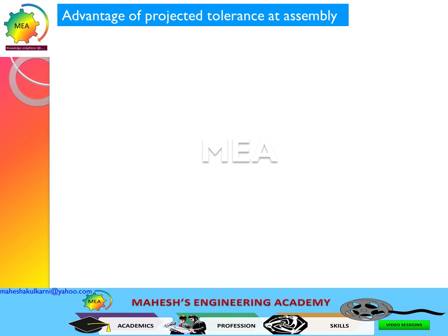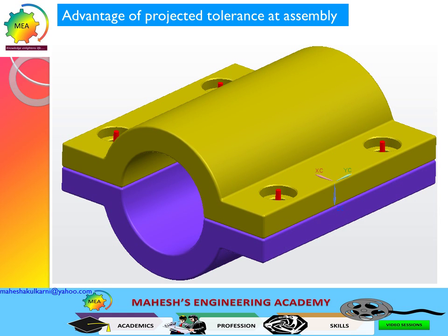The advantages of using projected tolerance at the assembly level: the projected tolerance is equal to the thickness of the coupling with the clearance hole. It takes care of interference of the fastener. If we are using studs, pins, bushes, or dowel pins for locating other parts, the projected tolerance will be very handy. We can also use coaxiality with projected tolerance to control the coaxiality of the hole. The projected tolerance takes care of interference.